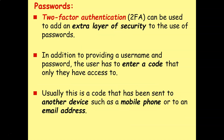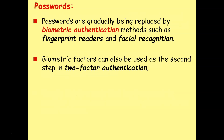Two-factor authentication (2FA) can be used to add an extra layer of security to the use of passwords. In addition to providing a username and password, the user has to enter a code that only they have access to, usually sent to another device such as a mobile phone or an email address. Passwords are gradually being replaced or enhanced with biometric authentication, for example a fingerprint reader or facial recognition. Biometric factors are often used as the second step in two-factor authentication — you enter your username and password and then confirm your identity with a fingerprint. This makes it a lot more difficult for hackers to force access.